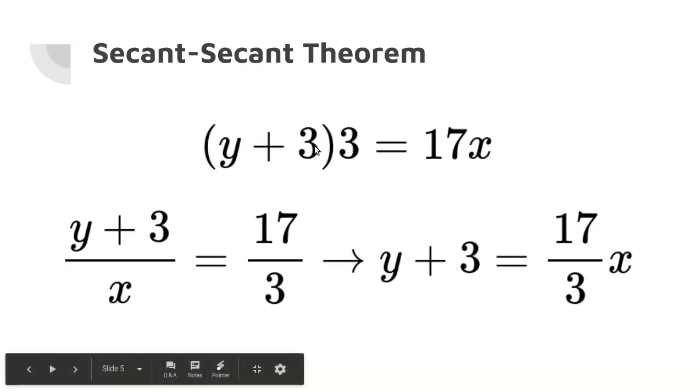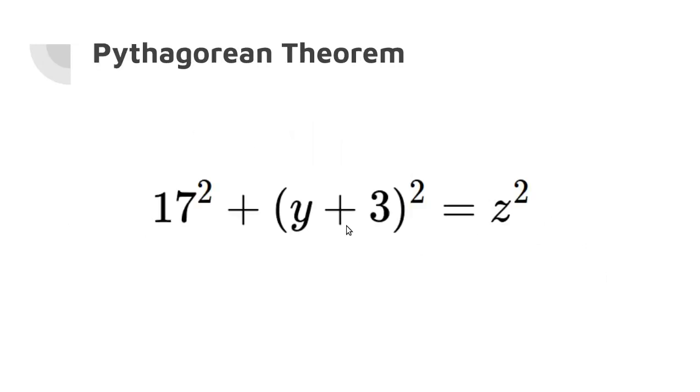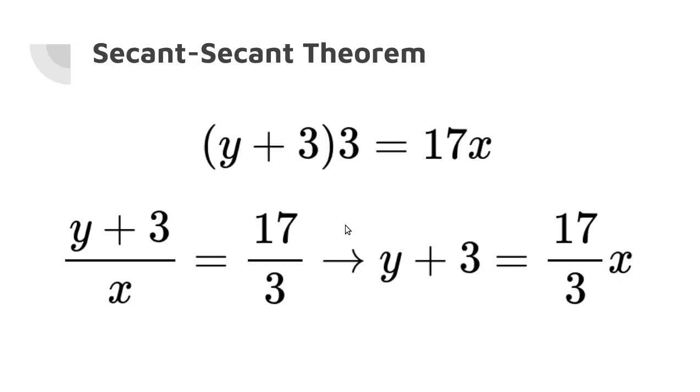So (Y + 3) times 3 equals 17X. We can then get this into a cool proportion by dividing this by 3X. So you get (Y + 3) over X equals 17 thirds. Solve for Y + 3, and we have Y + 3 is 17 thirds X. This is not quite what we wanted. Remember, to solve for Z, we need to get Y + 3 in terms of Z. However, by solving for Y + 3 in terms of X, we've gotten at least one step closer to getting it in terms of Z.